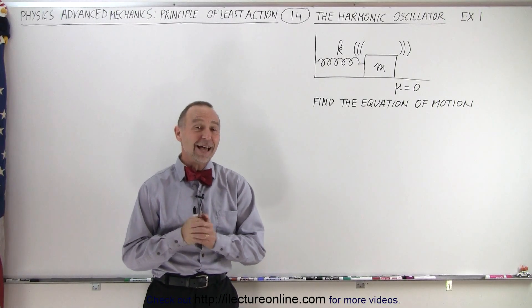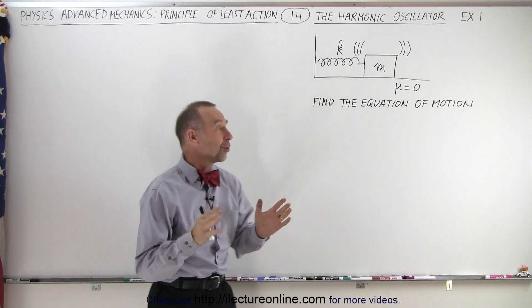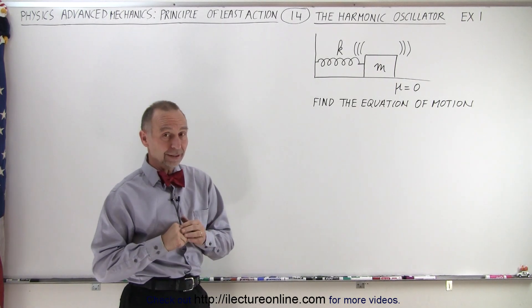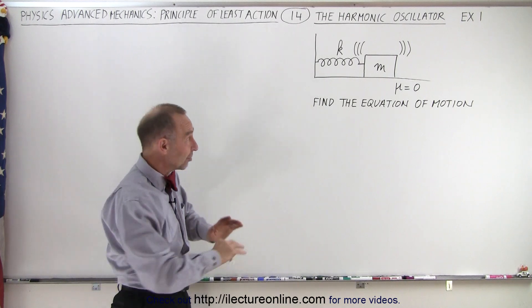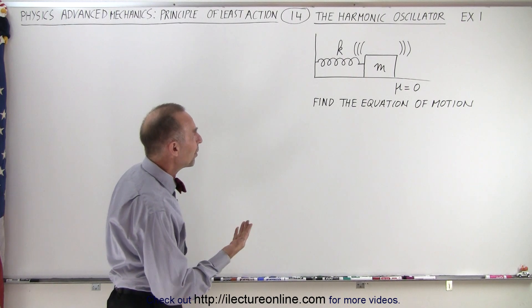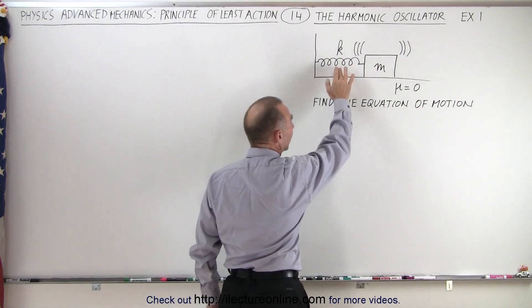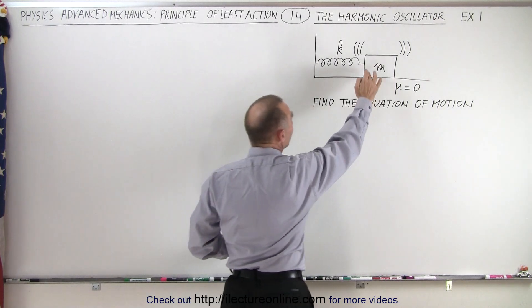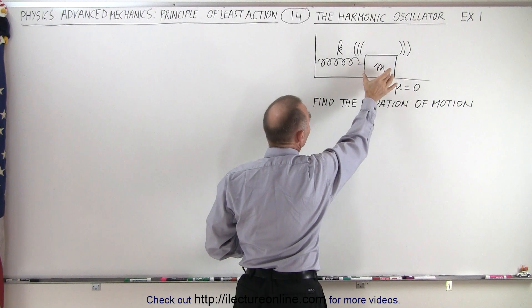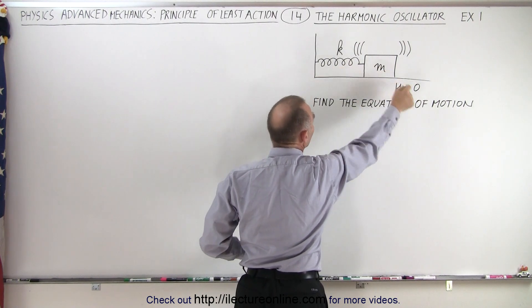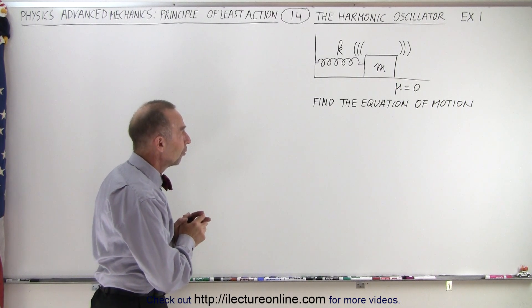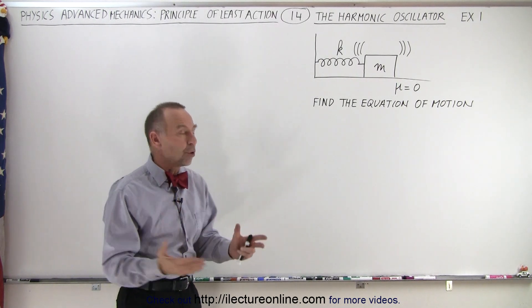Welcome to iLectureOnline. Let's do an example to show how the Lagrangian is a really good way to solve a problem like this. This is a simple problem that could be solved in many different ways, but let's use the Lagrangian. We have a massless spring with an object of mass m attached, oscillating back and forth over a frictionless surface. Find the equation of motion of this system.